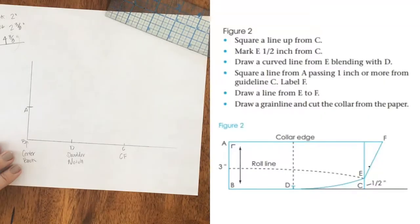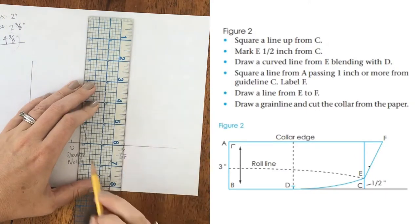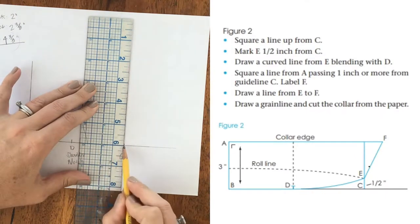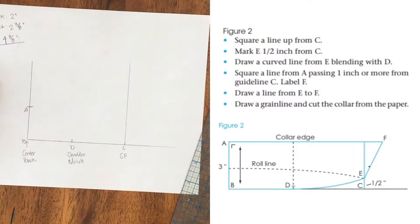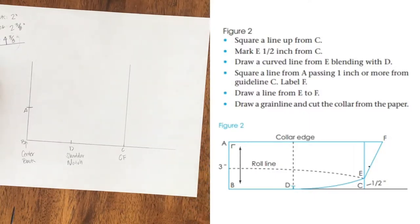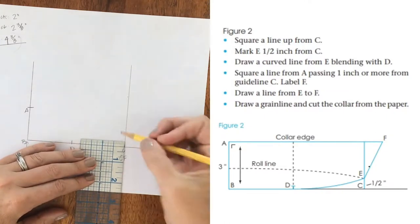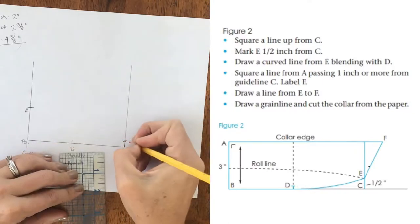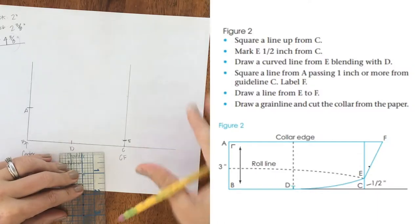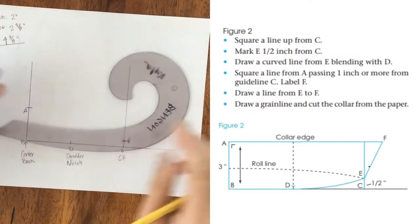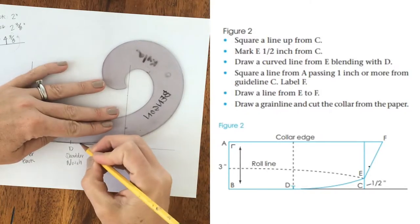Okay, figure two, square a line up from C. So to square it, I make sure that the line I already drew lines up on my ruler, so I'll get a perfect 90 degree angle. Mark E, half an inch up from C. So I'm on the half scale. So what is half of half an inch? It would be one fourth. Draw a curved line from E, blending with D. There we go.